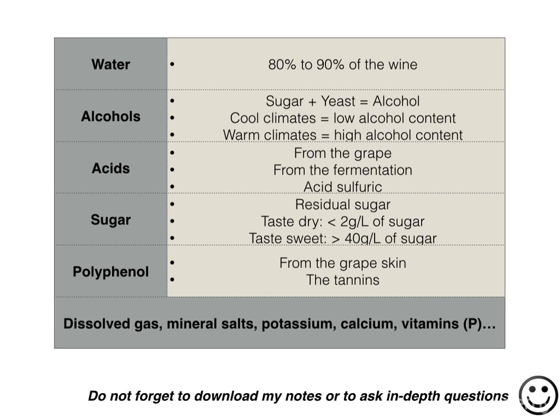Wine always has some sugar that the yeast could not transform into alcohol, for different reasons we will discuss as well. These are the residual sugars. A wine that we qualify as dry during a tasting usually has less than 2 grams per liter of sugar, whereas it is more than 40 grams per liter for sweet wines.